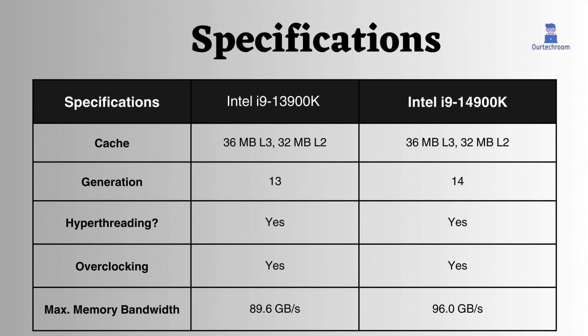The 14900K is a 14th generation Intel i9 processor while the 13900K is a 13th generation Intel i9 processor. Both processors support overclocking and hyperthreading.